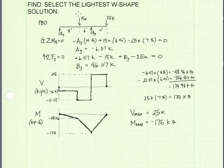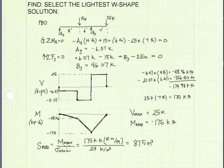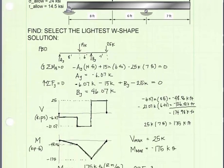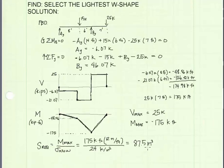In this problem, we are asked to select the lightest W shape that will work. So we're going to need to first find our section modulus. That will be our required section modulus. Our section modulus is equal to our maximum moment divided by our allowable stress. And we calculated the maximum moment to be negative 175 kip feet. I'm just going to take the magnitude, 175 kip feet, because we always look for section modulus as a positive value. So 175 kip feet, multiply it by 12 inches per foot to get this unit into kip inches. That's so that we can divide it by our allowable stress, which was given in the problem statement, here to be 24 ksi. So that will allow our units to work out to inches cubed. So 87.5 inches cubed is our section modulus.